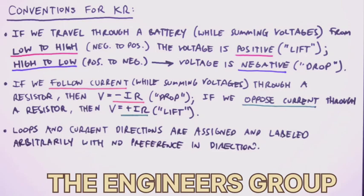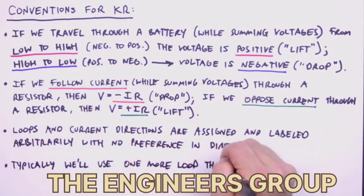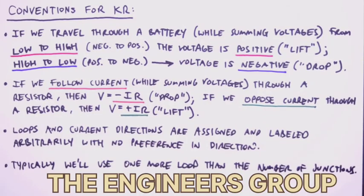One final convention relating to labeling our circuit diagram. Typically, we'll use one more loop than the number of junctions in the circuit, so be sure to have enough of them labeled before applying Kirchhoff's rules.